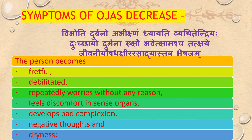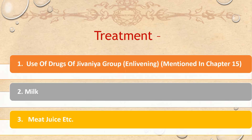Symptoms of Ojas decrease: the person becomes fretful, debilitated, repeatedly worries without any reason, feels discomfort in sense organs, develops bad complexion, negative thoughts, and dryness. The treatment is use of drugs of the Jivaniya group — milk, meat juice, etc. as described in Chapter 15.